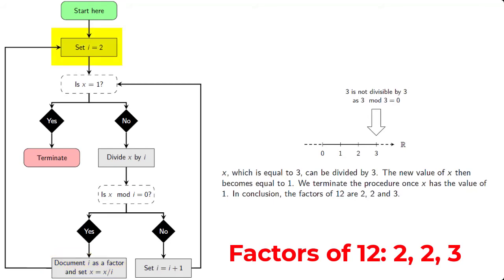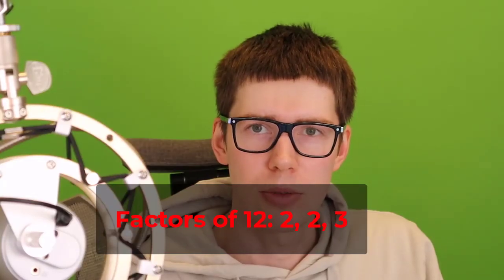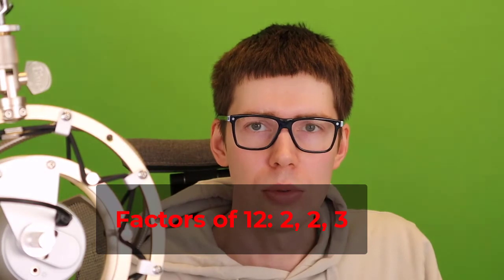We then loop back to the top and set i equal to 2. And we then ask, is x equal to 1? And that is true this time. x has now become equal to 1, and therefore we terminate the algorithm. In conclusion, the factors of 12 are 2, 2, and 3.